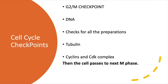At the G2/M checkpoint, which happens after S phase, we check for proper DNA replication — did DNA synthesis occur correctly? It also ensures all preparations required for M phase are met: enough proteins, ATP, and tubulin synthesized. It checks whether the M phase cyclins and CDK complexes have been paired. If all is in order, we get a go signal to enter M phase.